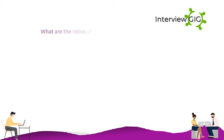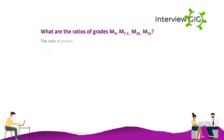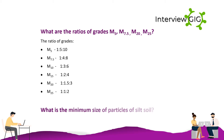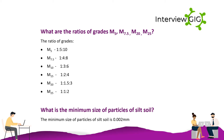What are the ratios of grades M5, M7.5, M20 and M25? The ratios of grades are: M5 — 1:5:10; M7.5 — 1:4:8; M10 — 1:3:6; M15 — 1:2:4; M20 — 1:1.5:3; M25 — 1:1:2.